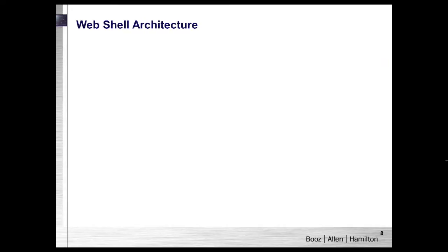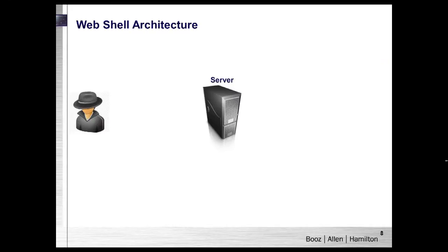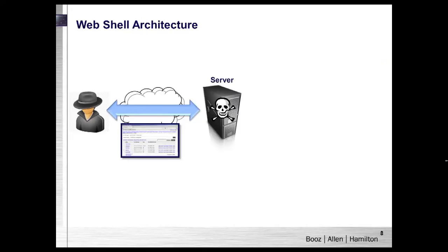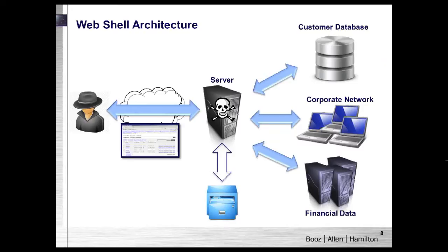The web shell architecture is straightforward: we have a public-facing server and an attacker who takes advantage of publicly available vulnerabilities to exploit the box and place a web shell there. Web shells can come in almost any server-side scripting language — ASP, JSP, PHP, Perl, Python, you name it. Once the web shell is up and running, the attacker can create files, execute arbitrary commands, access back-end databases, or exfiltrate sensitive information.